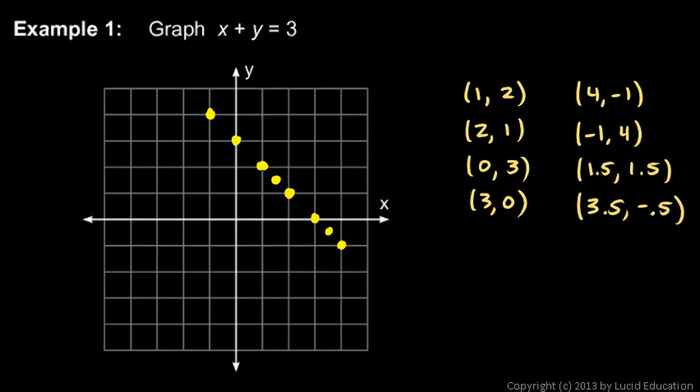And what we see is a line emerging. And you can draw in that line. Let me try that again. I want to make this accurate. Okay. And put arrowheads on that line. Because that line will extend infinitely in both directions.